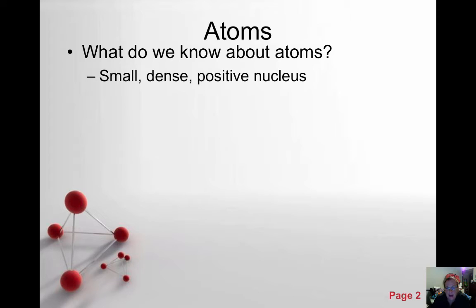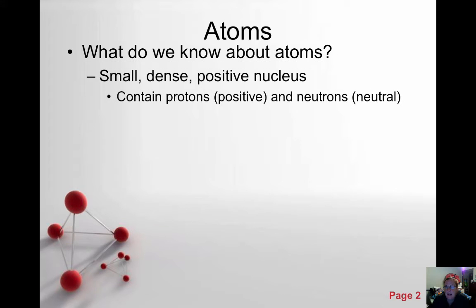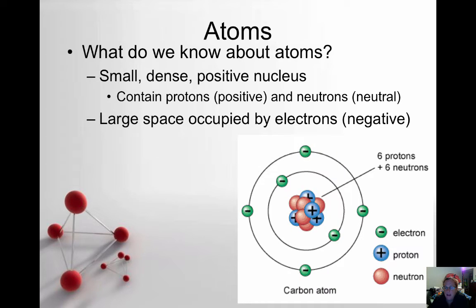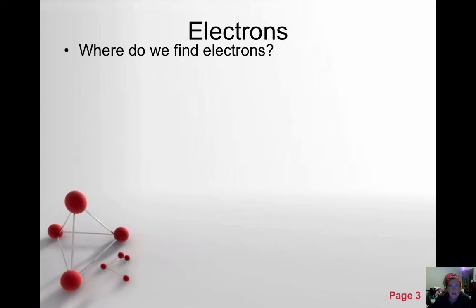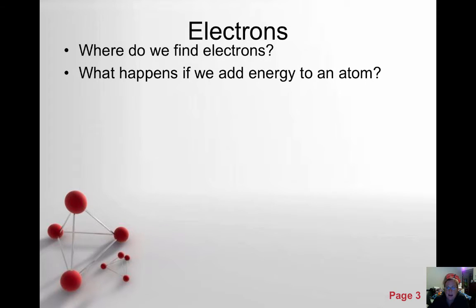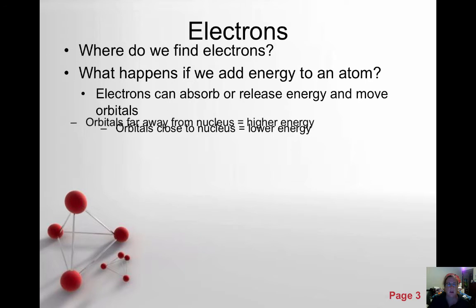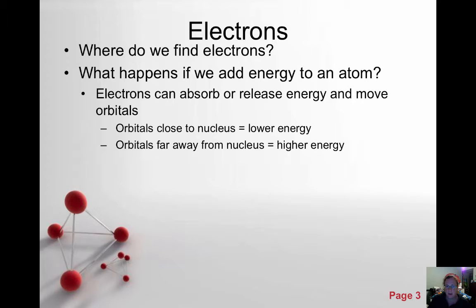We've been talking about atoms. At this point, we know that we have a small, dense, positive nucleus. It contains protons, which are positively charged, and neutrons that are neutral or have no charge. There's a large space occupied by electrons that are negative. This is the planetary model — Bohr's model — and inside we have our protons and neutrons. So where do we find the electrons, and what happens if we add energy to an atom? The electrons can absorb or release energy and move to different orbitals. Orbitals close to the nucleus are at a lower energy; the closer to the nucleus, the lower the energy level. As they get further away, they are at higher energy levels.